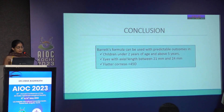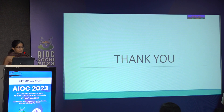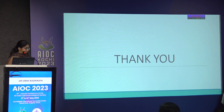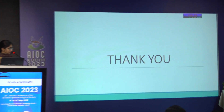In conclusion, Barrett's formula can be used with predictable outcomes in children under two years and above five years, in eyes with axial length between 21 to 24 mm, and in flatter corneas of less than or equal to 45 diopters. Thank you. This paper has been submitted to IJO.